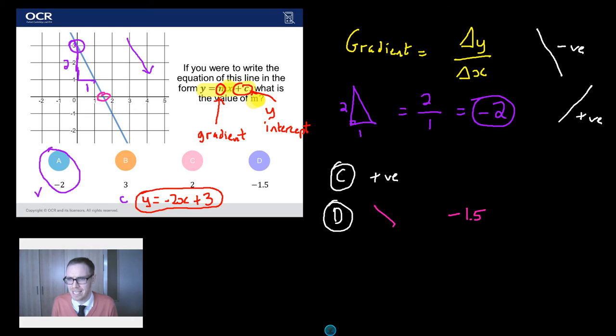Just before we talk about another wrong answer, let me just try and convince you that it didn't matter where I drew that right-angled triangle. Say I drew it a big one going down there and across there. I'll still get the same gradient, because my change in y this time is 1, 2, 3, 4 units up. And my change in x is 1, 2 units across. And 4 divided by 2 is still going to give me 2. And I'm still going to get me negative answer, because it's me negative gradient. So I'm still going to end up with the same answer there.